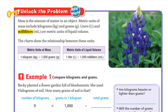The mass is the amount of matter in an object. Metric units of mass include kilogram, which is kg, and grams, which is g. And liters and milliliters are metric units of liquid volume. So for liquid volume, we have liter and milliliter.